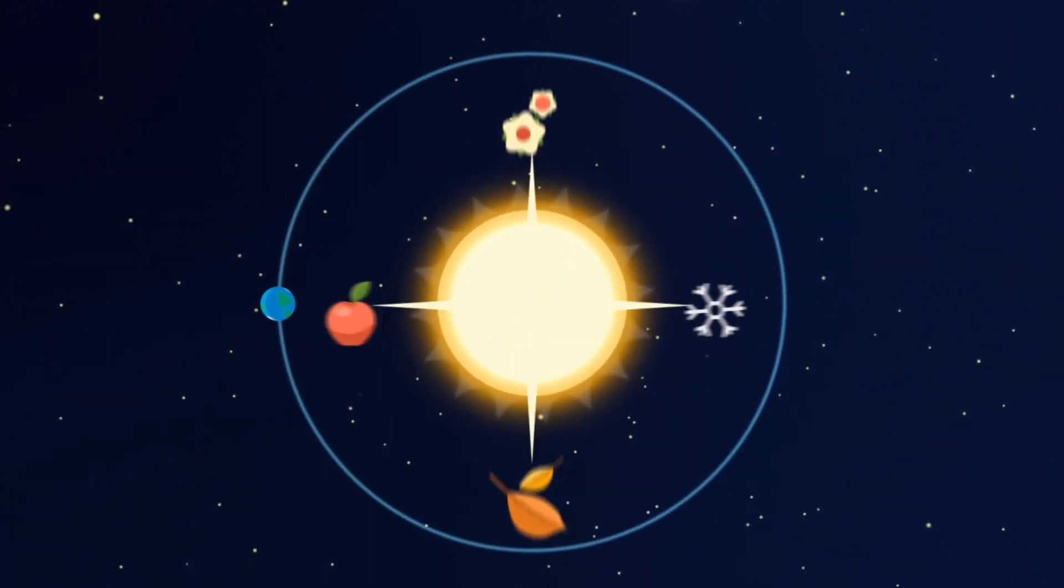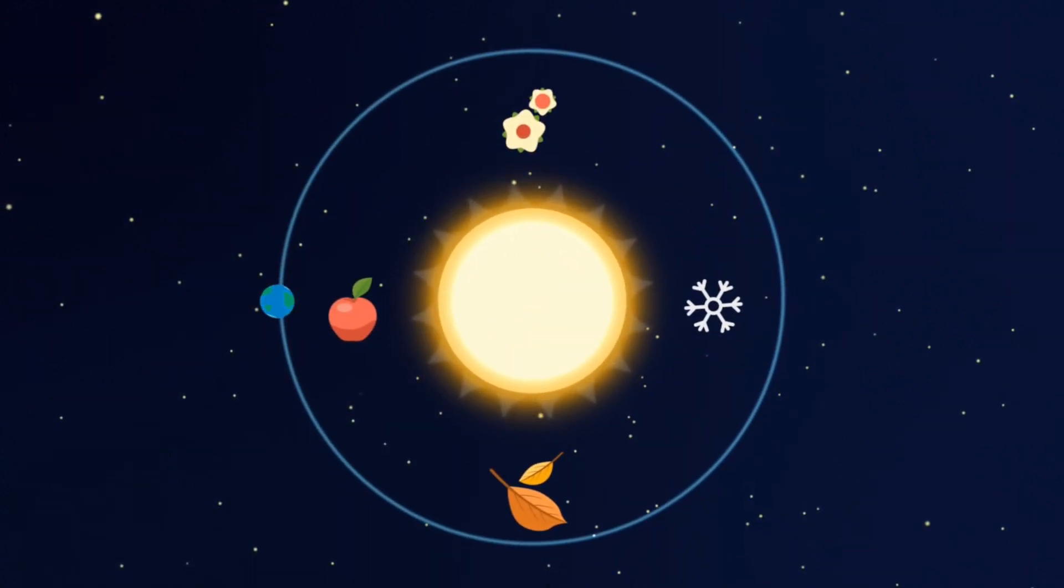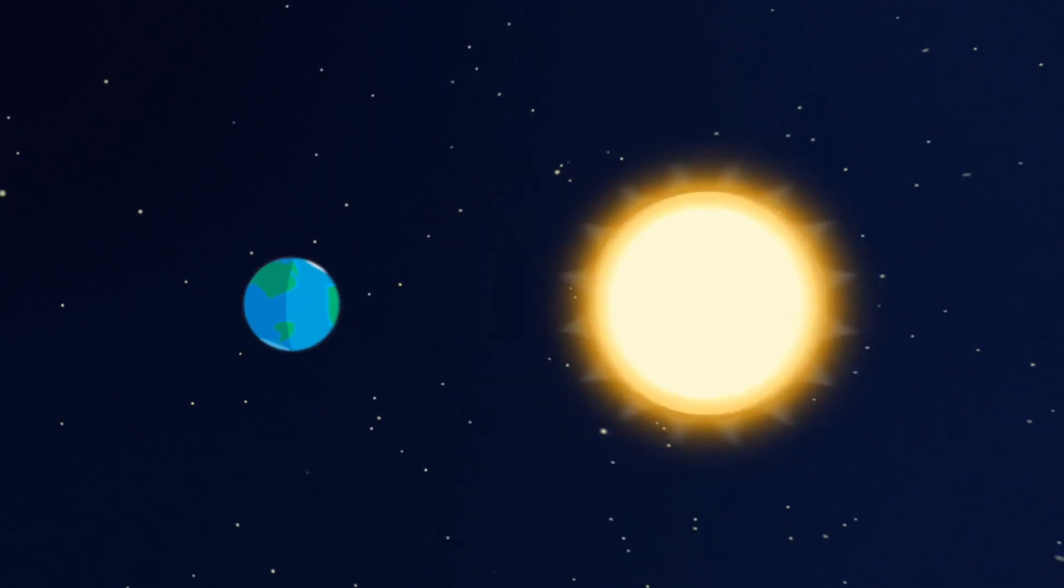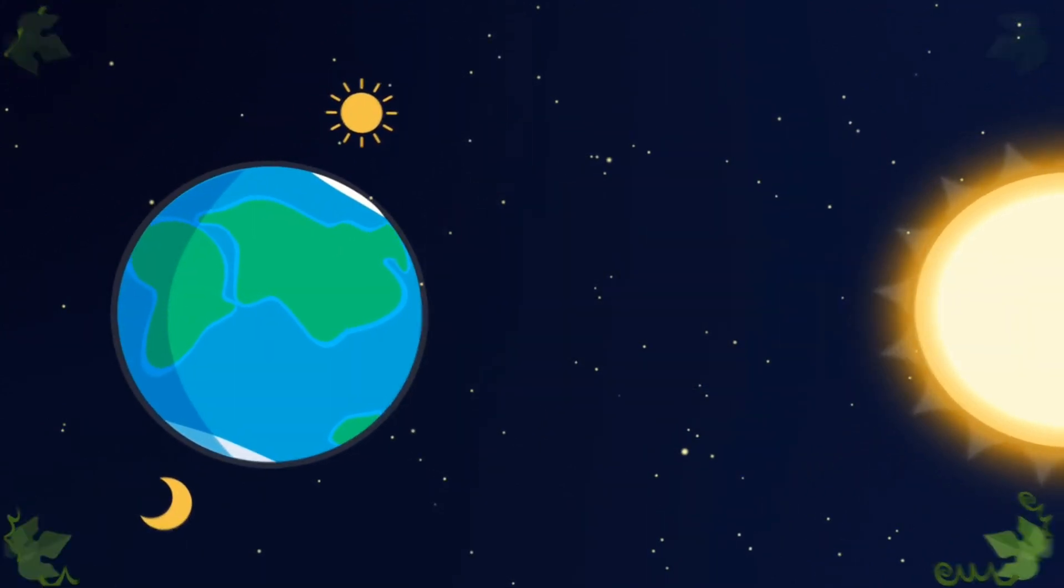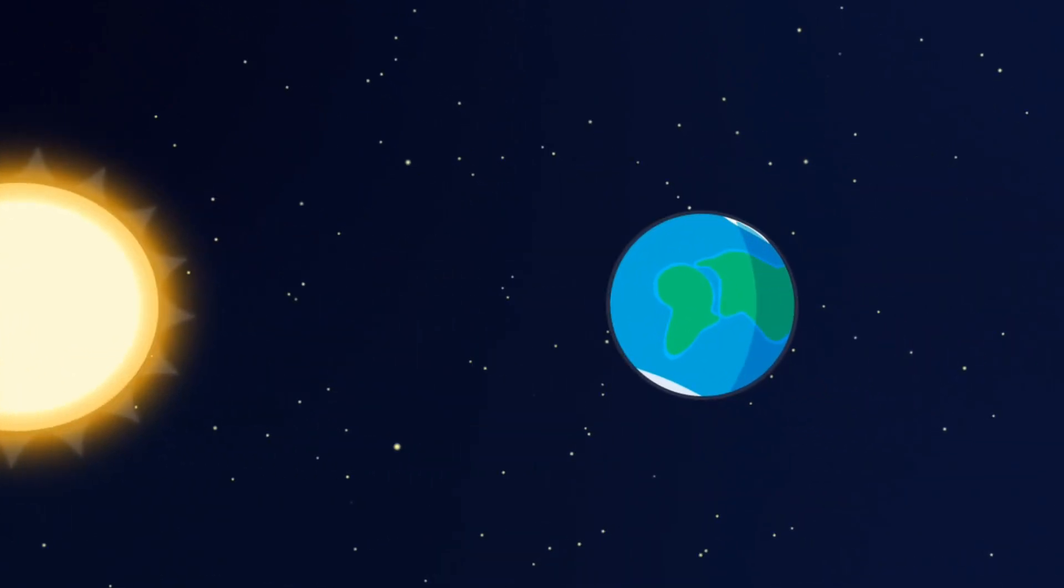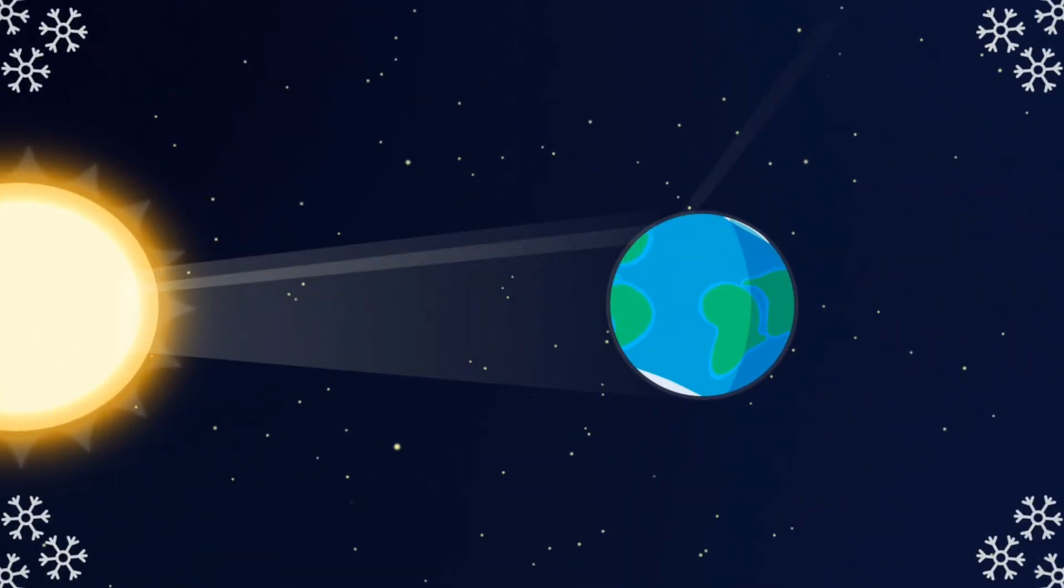Because of this tilt, the Earth positions its sides toward the Sun differently in each season. When solar rays fall straight, it gets hotter and summer comes. If the rays fall at an angle, the heat is lower and winter comes.